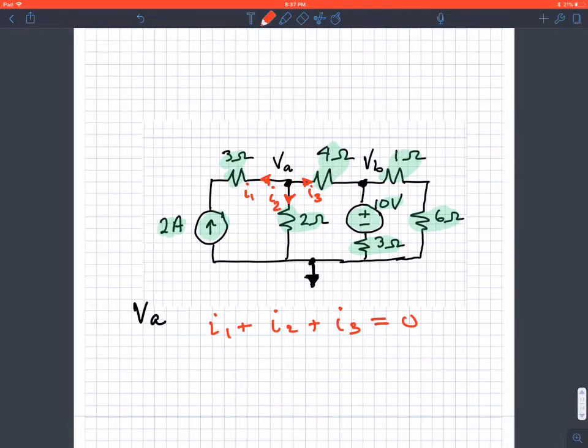It's just a matter of figuring out what is I1. This one's a little bit of a curveball because this 2-amp source means the 3-ohm resistor doesn't affect the current. No matter what, this current source puts 2 amps on that branch, so I1 is minus 2. That resistor's a red herring.